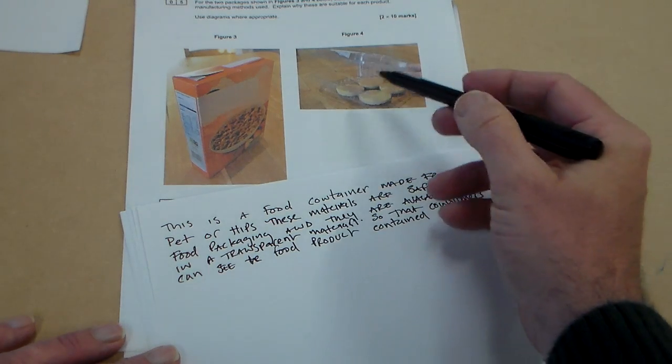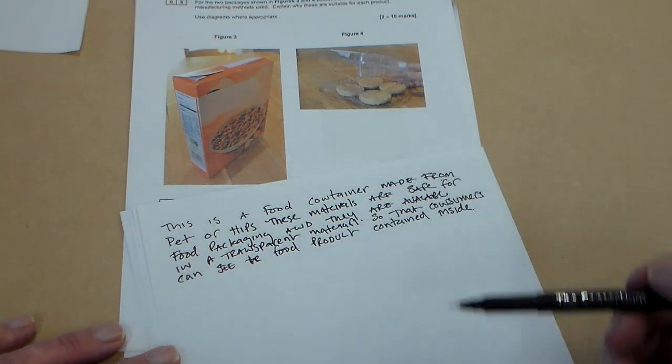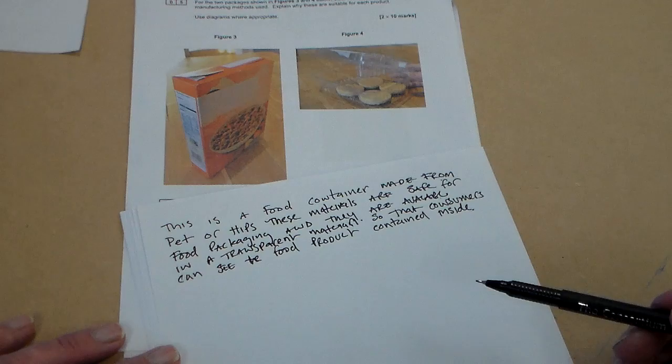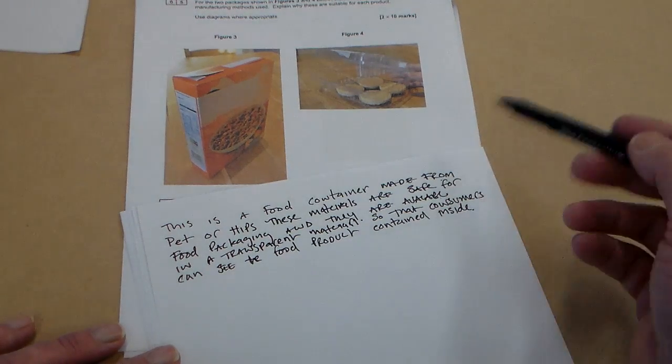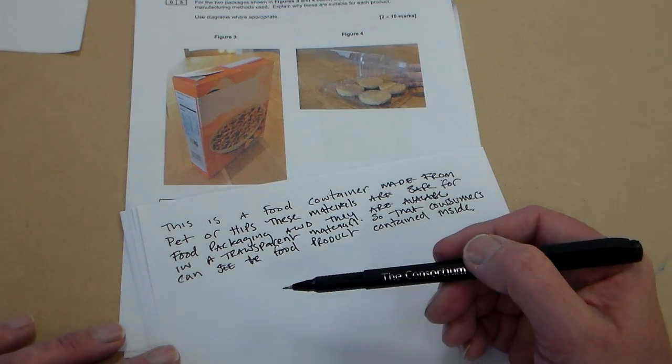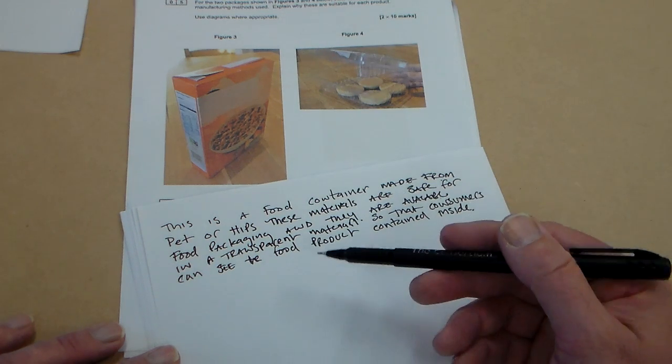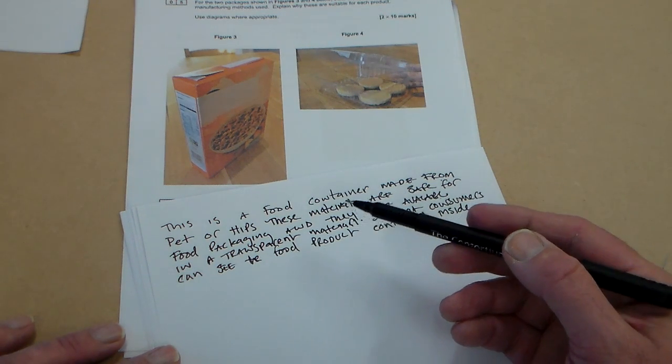Basically, if you've got nice biscuits in there, you want to see what the biscuits look like, so you can see it with the food packaging. So I think that will do for that. We're looking at 8 to 10 in the 8 to 10 marks band again. Now obviously we've got to use some diagrams. We've got to say about the process.